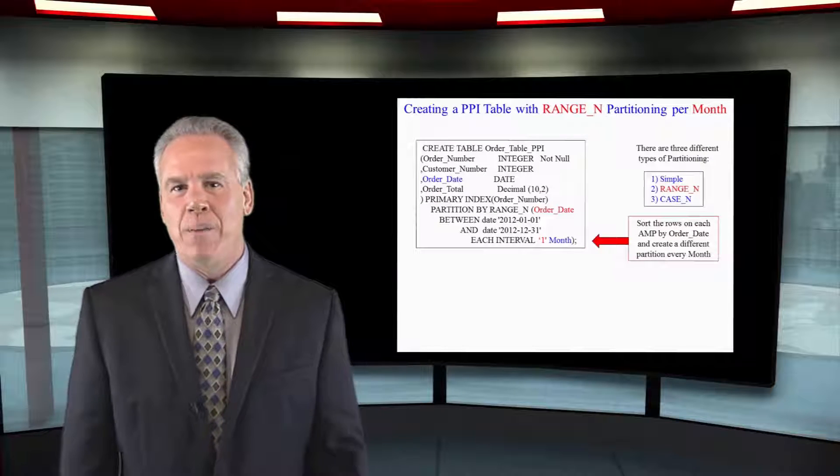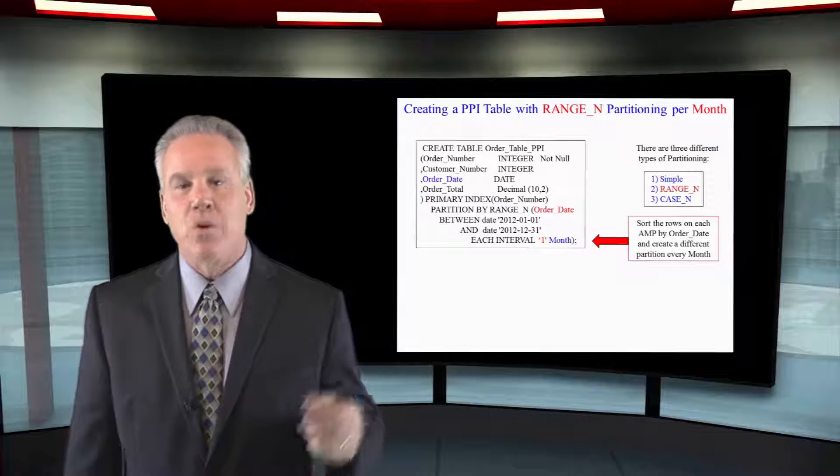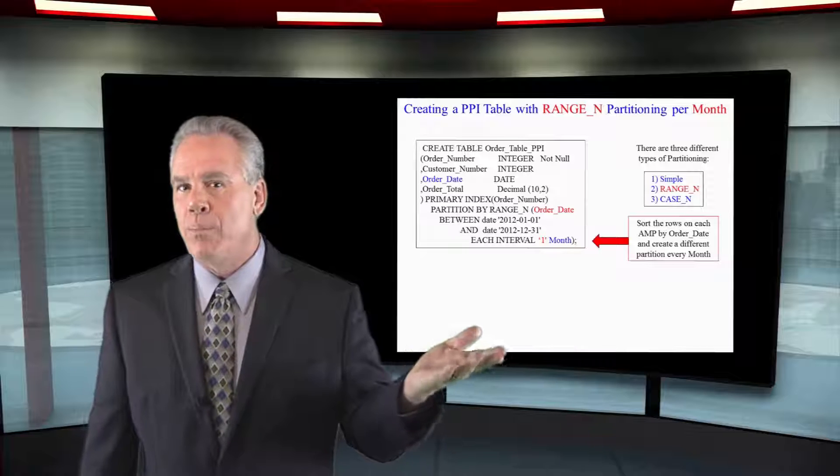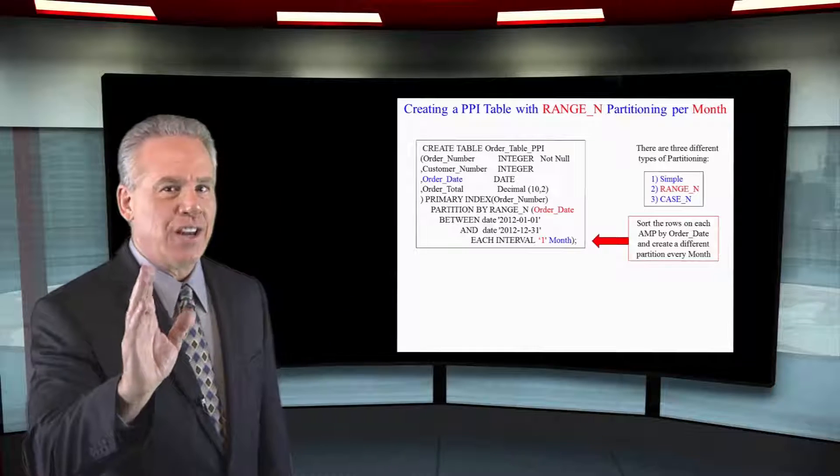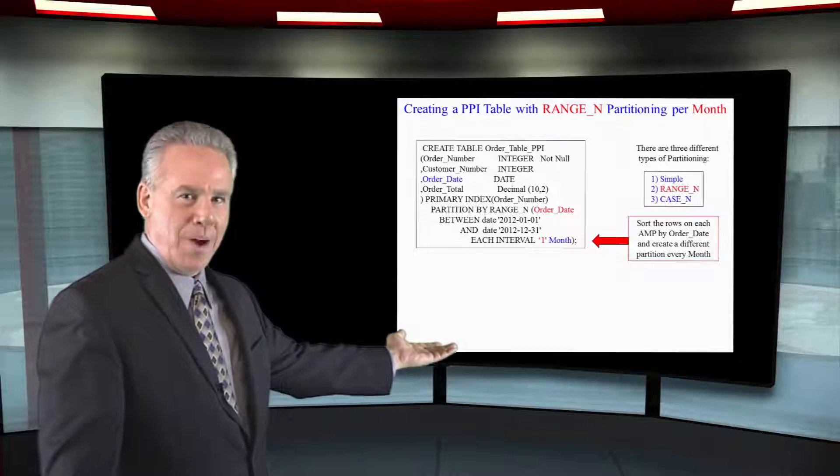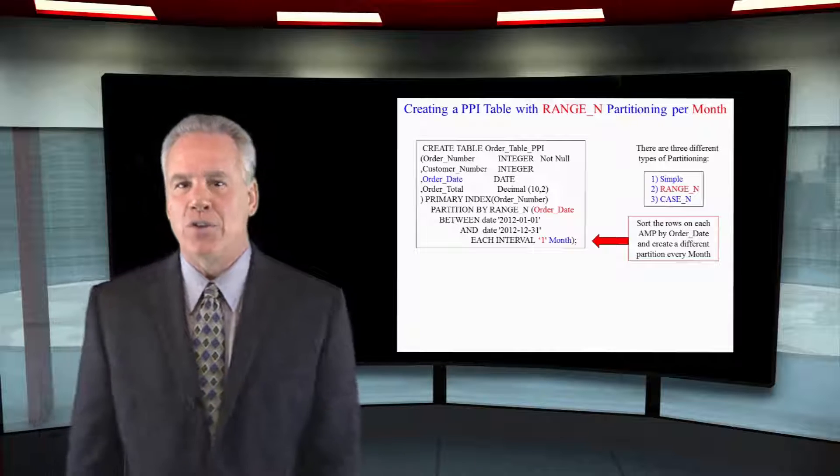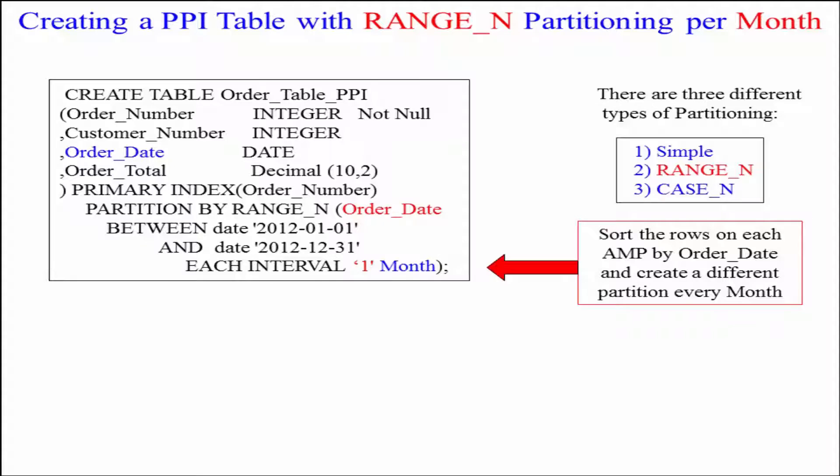Here's another example of a partitioned primary index table. We're using a RANGE_N, but we're going to partition each interval one month. So let's take a little closer look at this. First of all, we list the create table, table name, open paren, all of the columns in their data type, close paren.